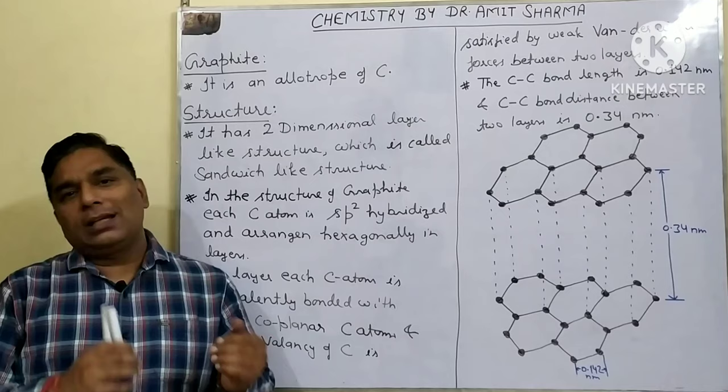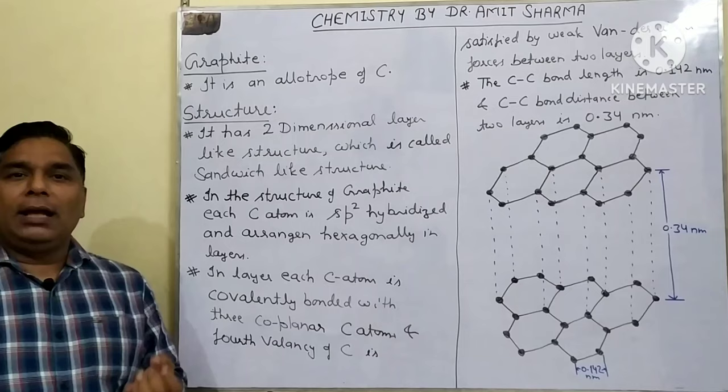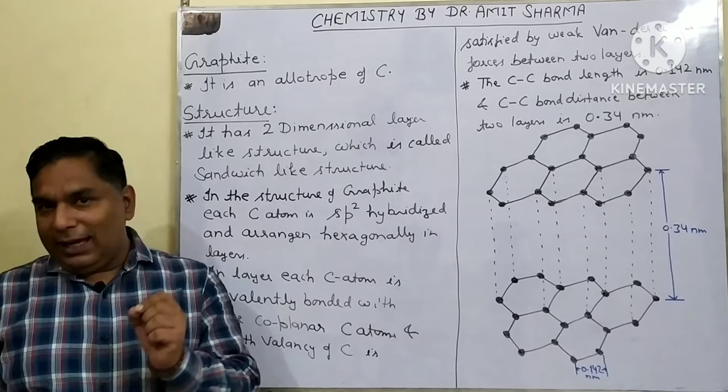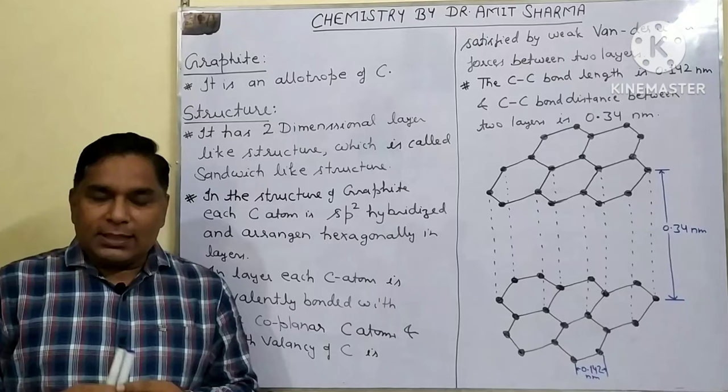Carbon has amorphous and crystalline allotropes. Amorphous allotropes include coal and coke, while crystalline allotropes include graphite, diamond, and buckminsterfullerene. In your course, you will study graphite and fullerene, so today we will discuss graphite.